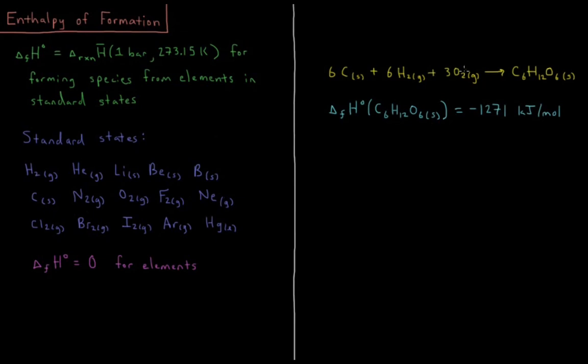So how do we do this in practice? So if we look at glucose, which is C6H12O6, that's a solid at 273 Kelvin and one bar. So the reaction for six solid carbon atoms plus six molecules of H2 gas plus three molecules of O2 gas at 273 and one bar forming one molecule of glucose, the enthalpy of formation for that reaction is minus 1271 kilojoules per mole.